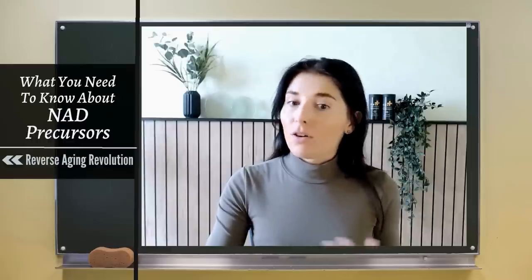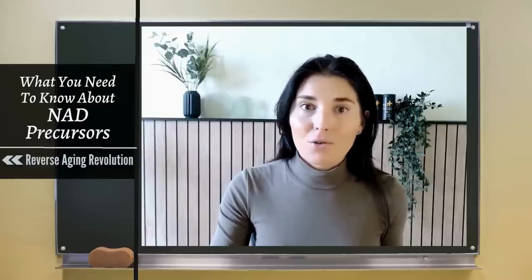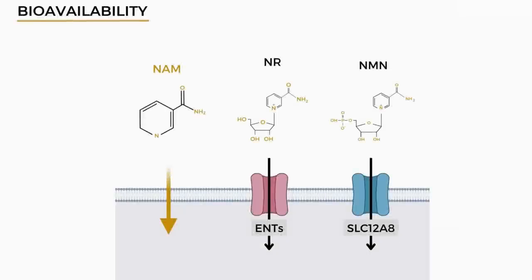The passage of molecules across the cell membrane is highly controlled. Both NR and NMN require special transport channels to cross into the cell membrane and into the cells, and not all cell types actually have these channels. Whereas nicotinamide has been shown to be freely diffusible across the cell membrane and less reliant on active transport. This means it can be absorbed by many more cells, which is favorable because NAD is required by all cells, so we want to boost it in as many cells as possible.